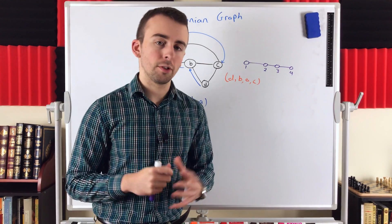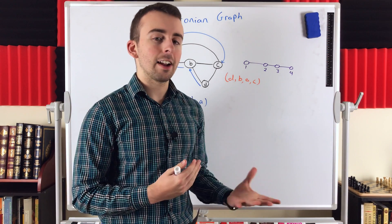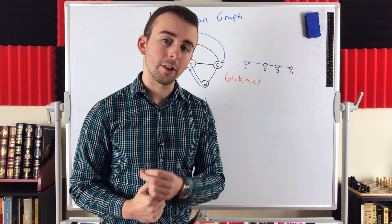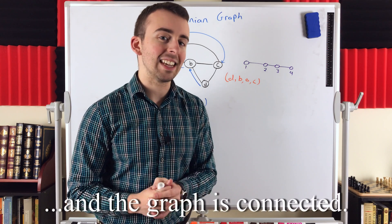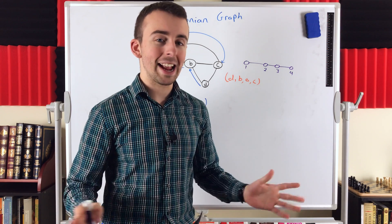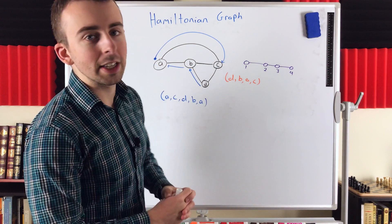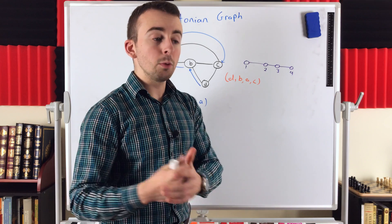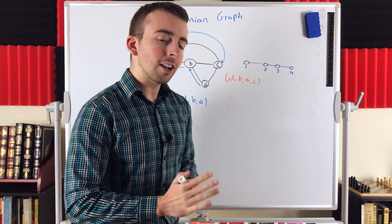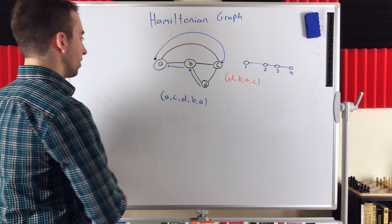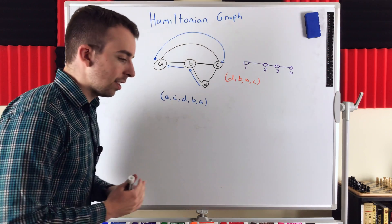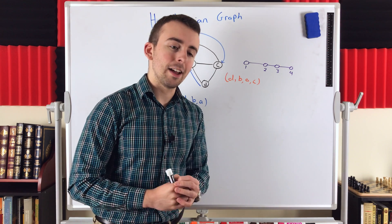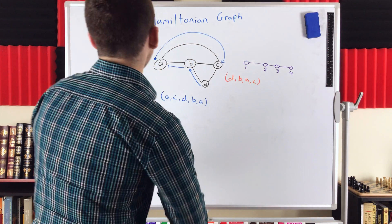We mentioned Euler circuits earlier, and there's a very nice necessary and sufficient condition: a graph has an Euler circuit if and only if every vertex has even degree. There's no such handy condition for Hamiltonian graphs. But we can talk about some necessary conditions and some sufficient conditions. In this lesson we'll focus on necessary conditions — conditions that, if a graph doesn't meet them, it's not Hamiltonian; and if it does meet them, it might be Hamiltonian, but we don't know for sure.